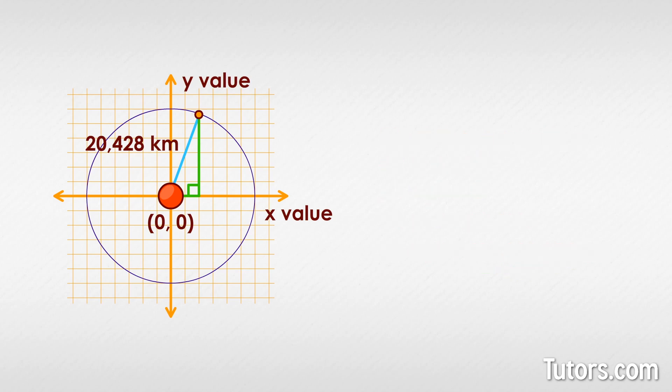Say you are an orbital mechanics engineer. You know your c value, your hypotenuse, is 20,408 kilometers. You want to see the longer leg value, the y value for a short leg value, the x value of 10,000 kilometers. The formula looks like this. And you solve for y.